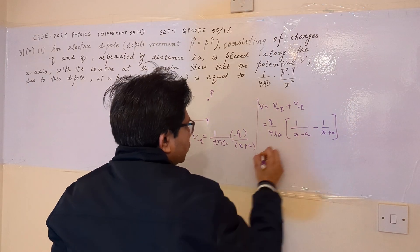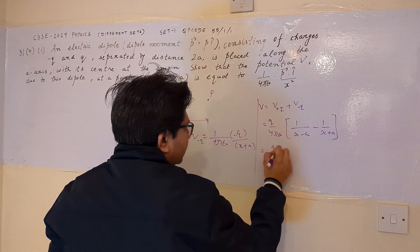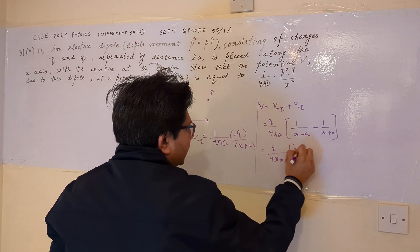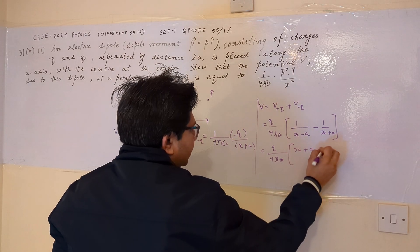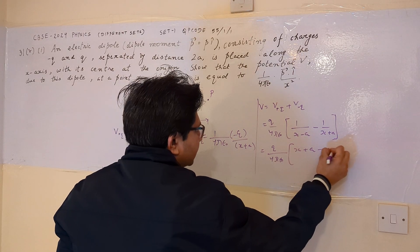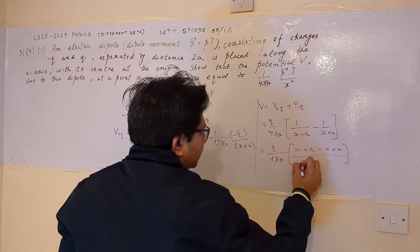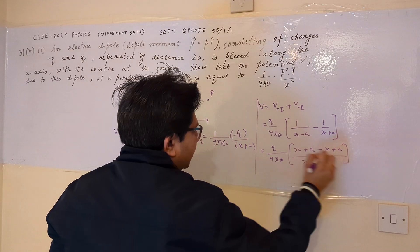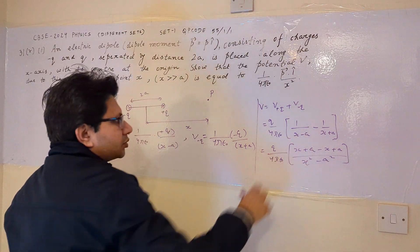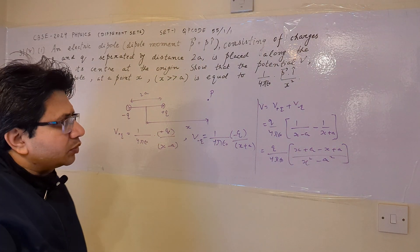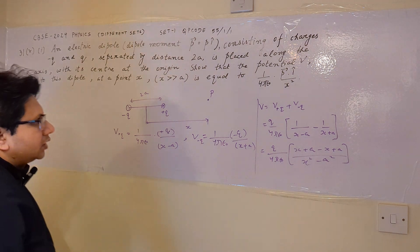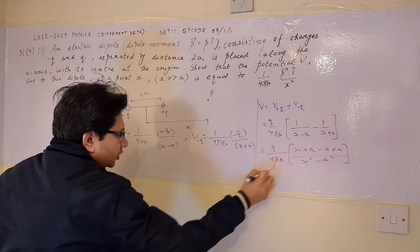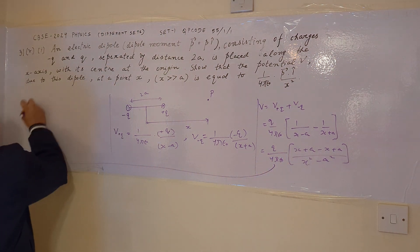After solving, this comes out to be q upon 4 pi epsilon naught times (x plus a minus (x minus a)) upon (x squared minus a squared), where (x minus a)(x plus a) equals x squared minus a squared.